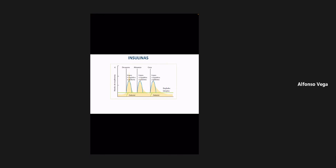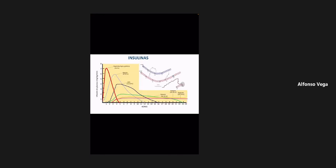También existen creencias como que con el uso de insulina las personas perdían la vista. Las insulinas de acción lenta o intermedia, que son la glarguina, la degludec y la detemir, que pueden ver en colores verde, amarillo fuerte y rosa en la imagen, son insulinas que tratan de sustituir la secreción basal de insulina.